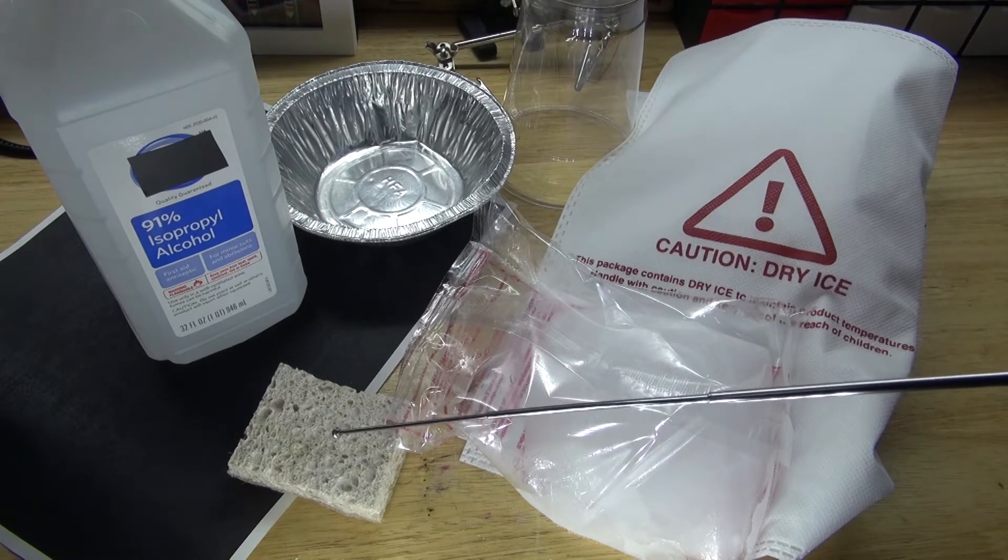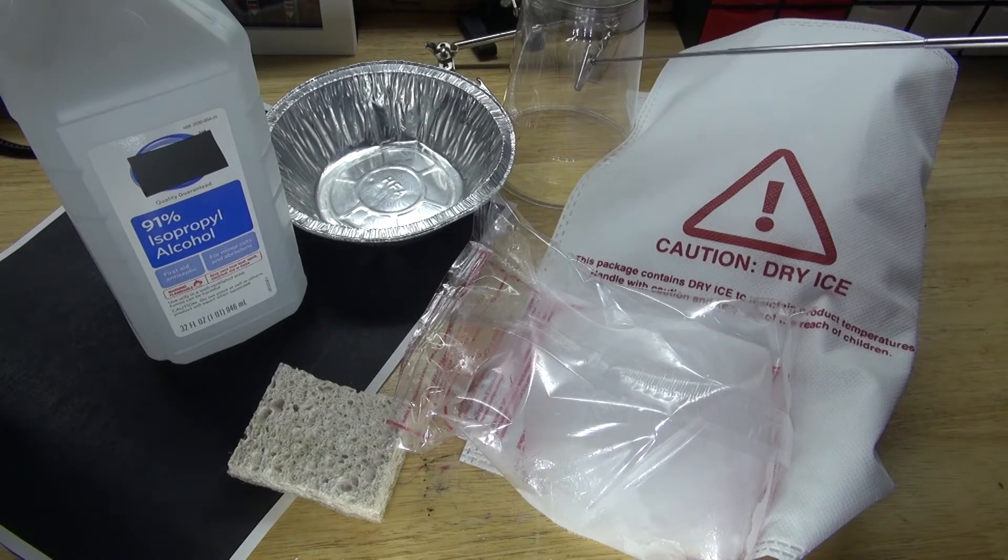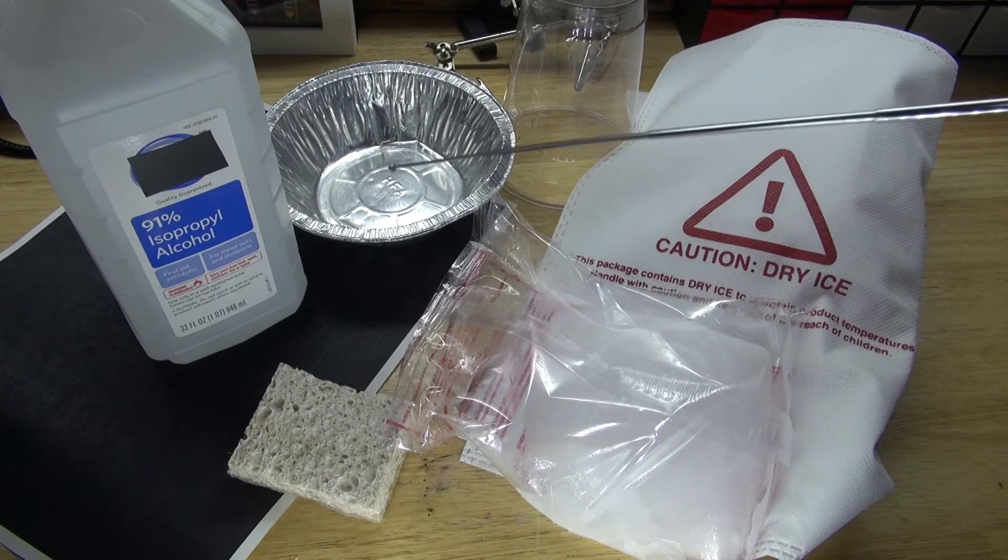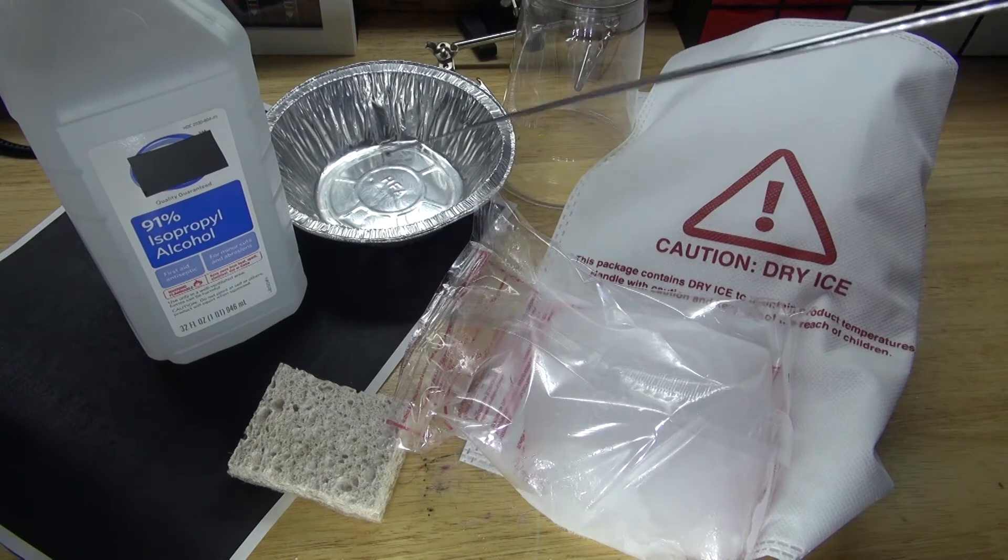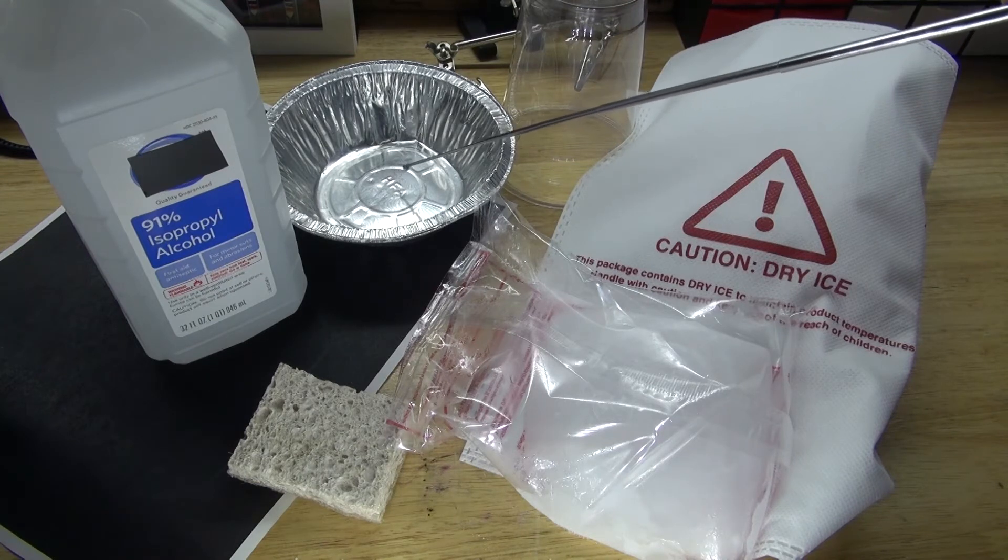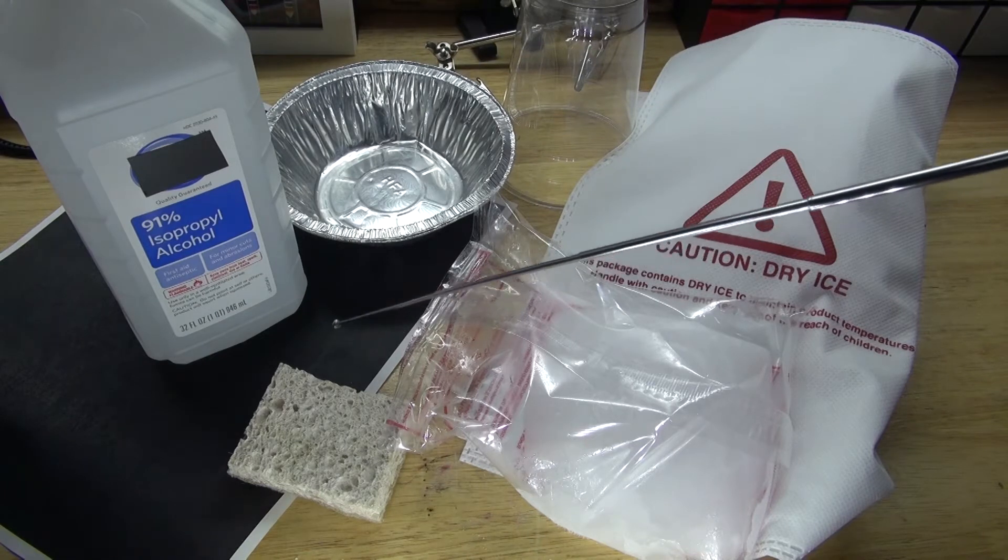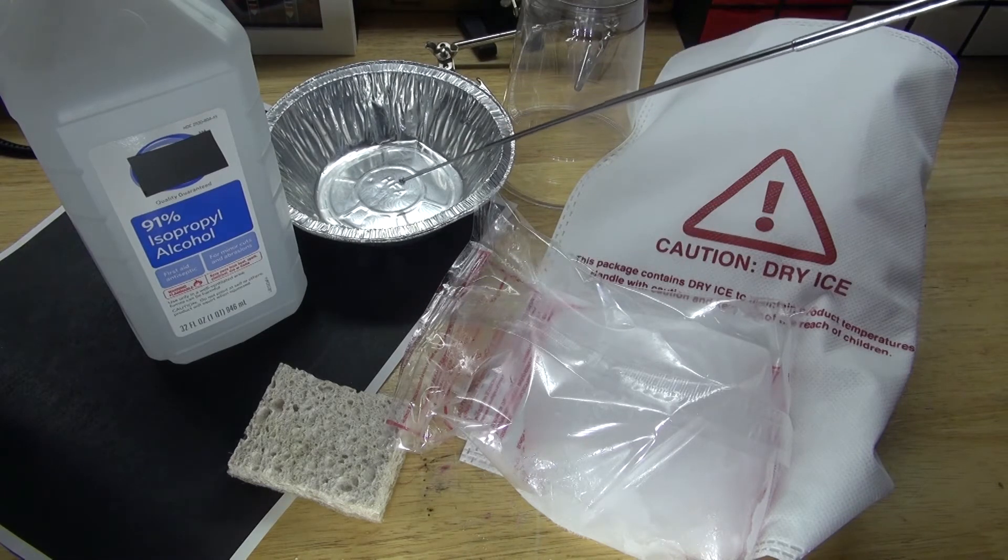You're also going to need a sponge to soak up the isopropyl alcohol and then to be placed on top of this plastic cup, which will then be placed on top of this aluminum tray. And this tray will be placed on top of some dry ice, which will then cool down the entire chamber, which will then allow the isopropyl alcohol to condense into clouds.